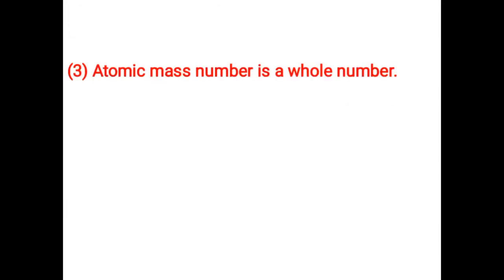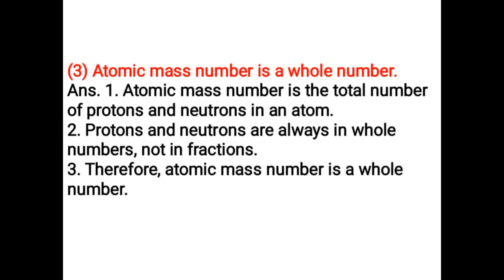Atomic mass number is always a whole number. Atomic mass number is the total number of protons and neutrons in an atom. Protons and neutrons are always present in whole numbers, not in fractions. Therefore, the atomic mass number is a whole number.